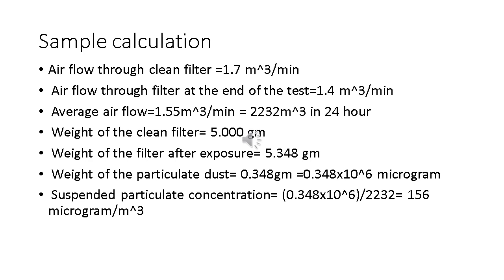Let's see a sample calculation. At the beginning of the test, air flow through the clean filter is 1.7 m³ per minute. At the end of the test, air flow through the filter is 1.4 m³ per minute — meaning the filter has collected dust and flow has reduced. The average air flow is 1.55 m³ per minute, which converts to 2232 m³ in 24 hours (calculated as 1.55 × 60 × 24).